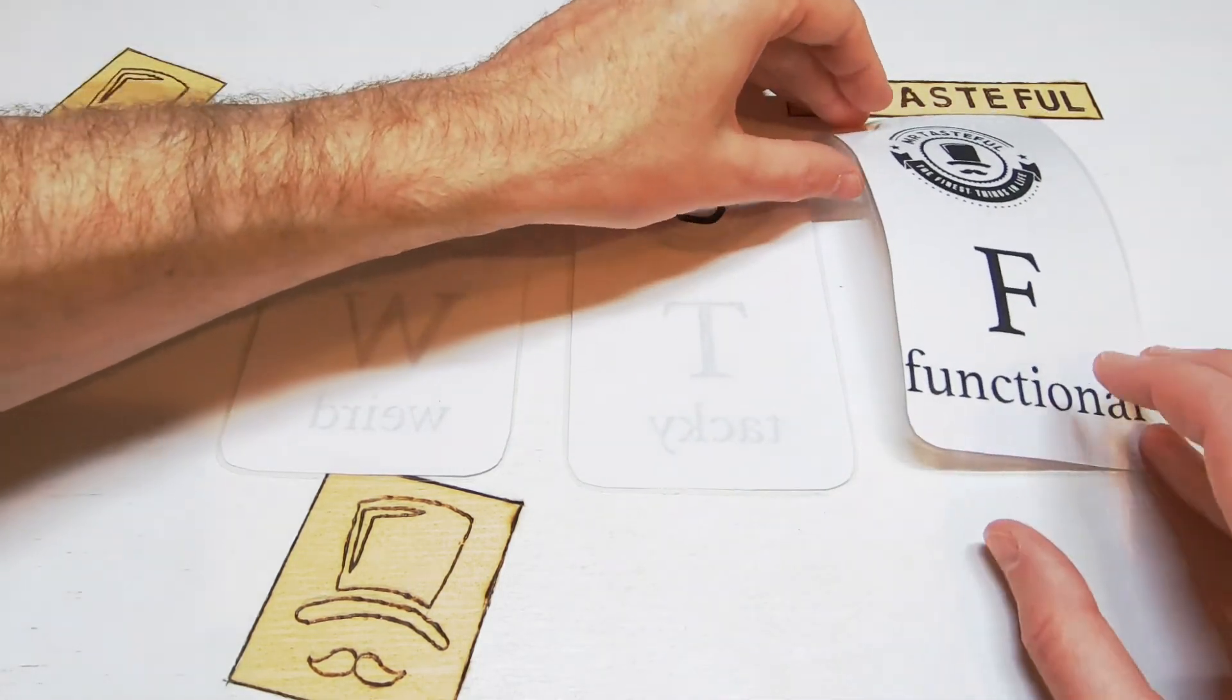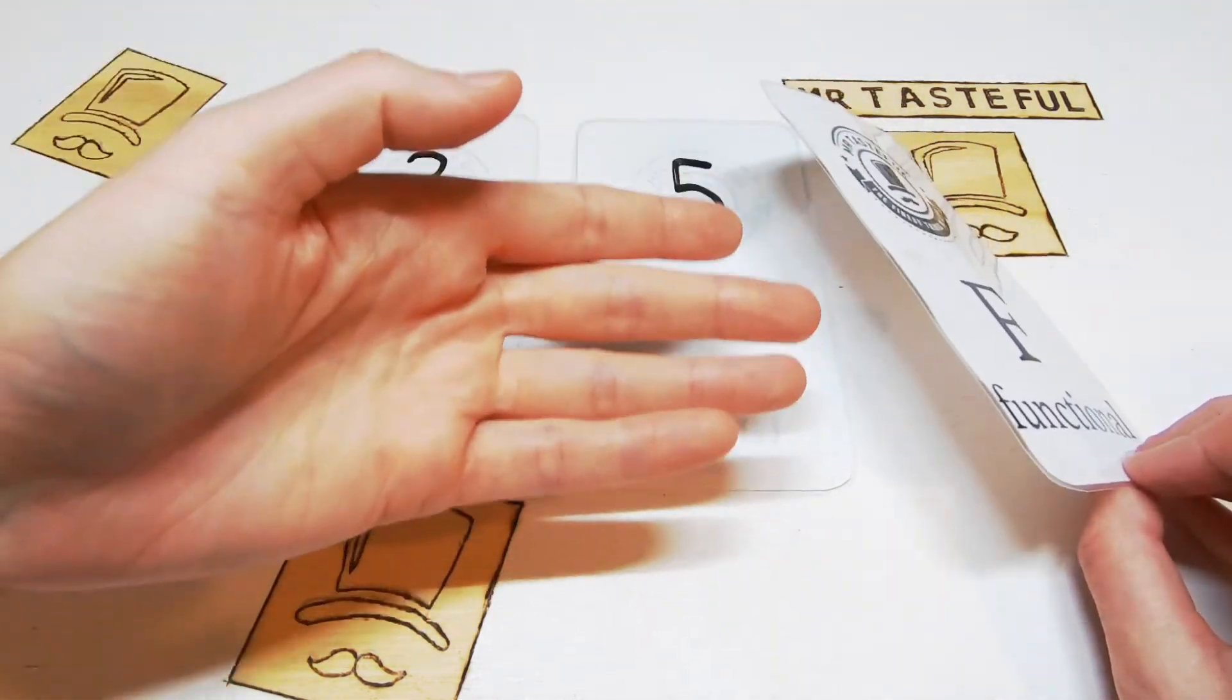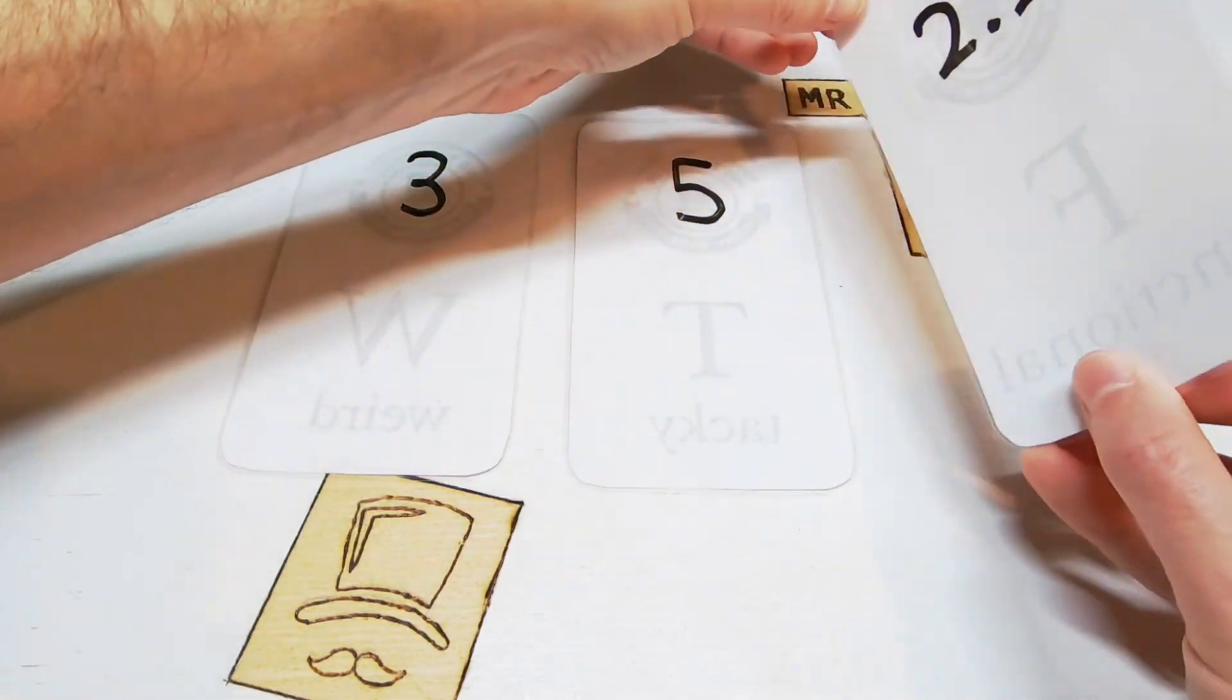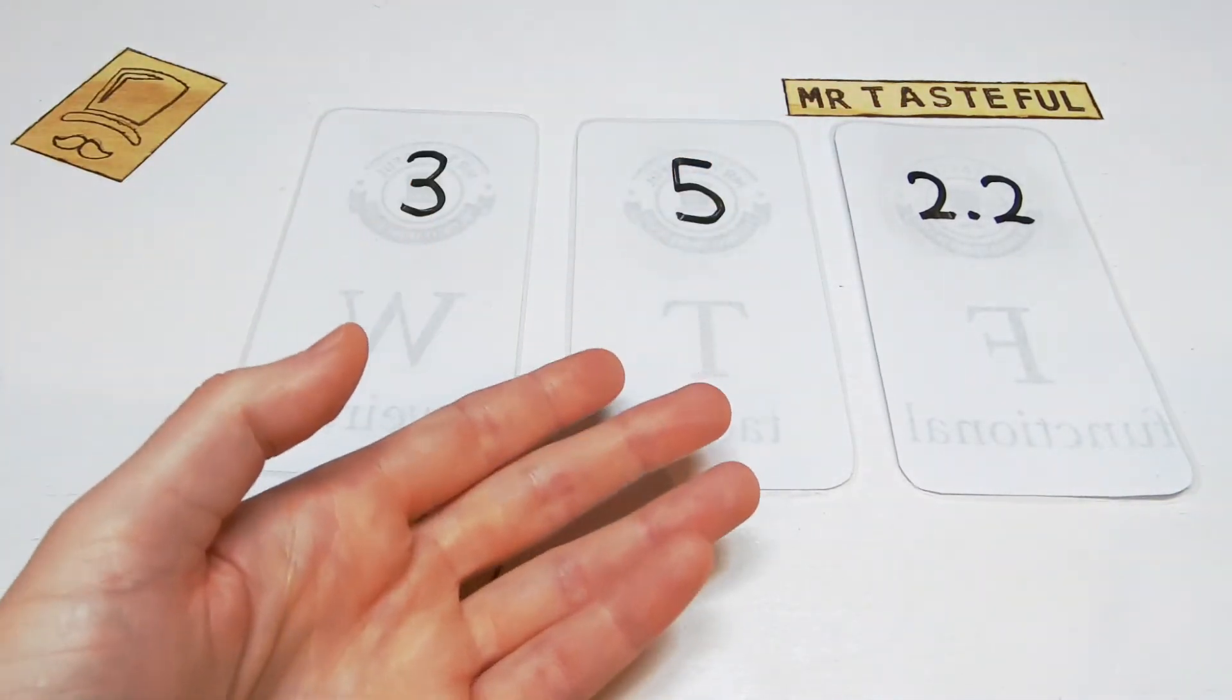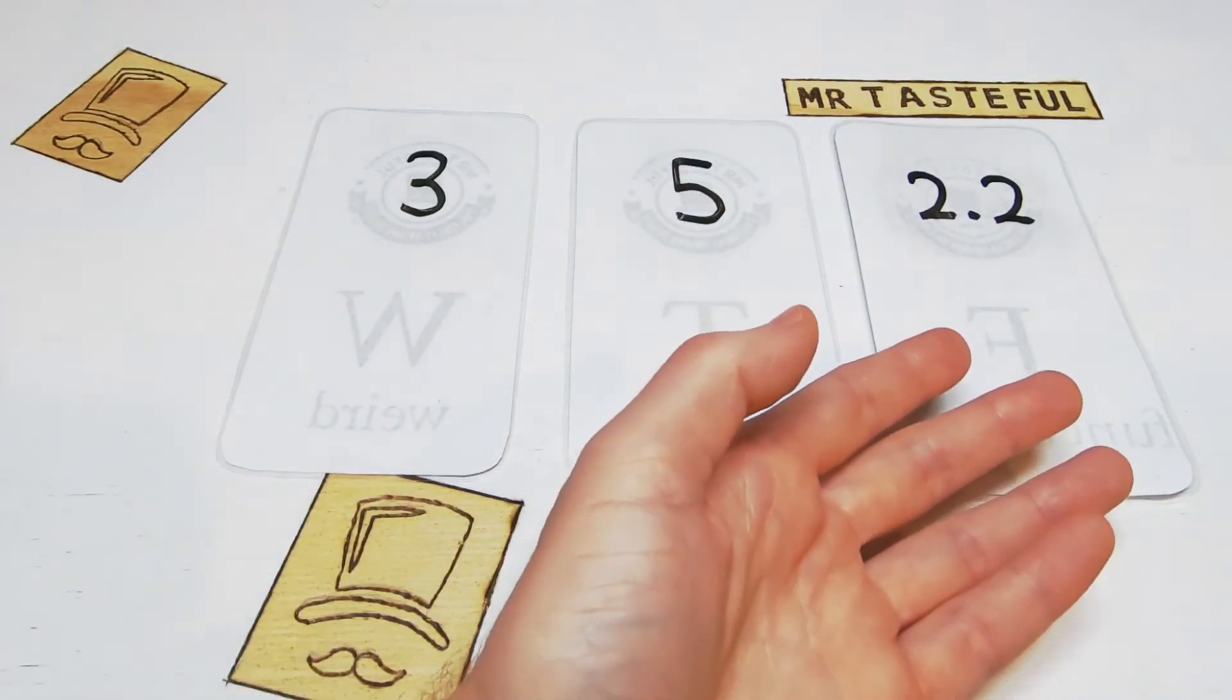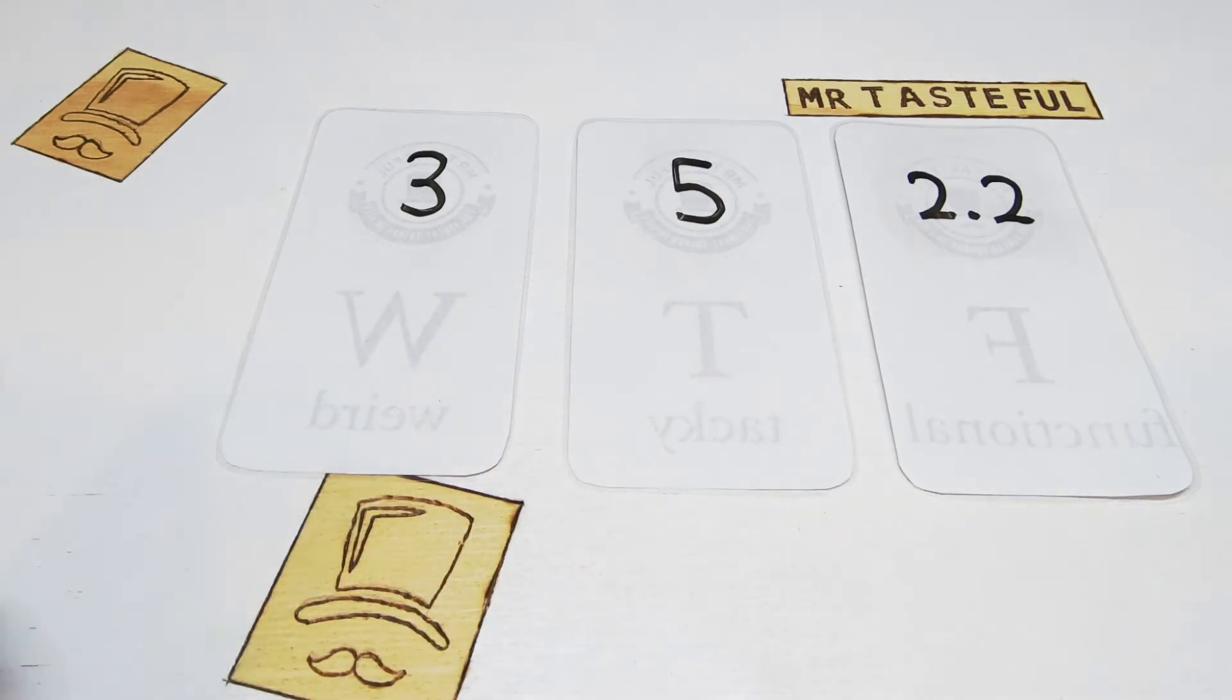Finally, functionality. It couldn't even cut my finger off. Two point two out of ten. So I'll need to find something else to do on a Sunday morning that involves public shaming. A Mr. Tasteful score of ten point two out of thirty.